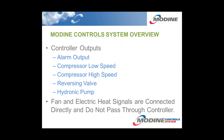For controller outputs, we have an alarm output that would go to an L-terminal on a conventional thermostat or to an alarm terminal on a water-to-water zone controller or boiler controller. The compressor low and high speed signals are also generated from the controller, as well as the reversing valve and hydronic pump if equipped. The fan and electric heat signals are connected directly to the fan and don't pass through the controller, meaning there's no variability on the fan speed or air volume. However, we do use ECM motors, so those will provide constant airflow for your application.